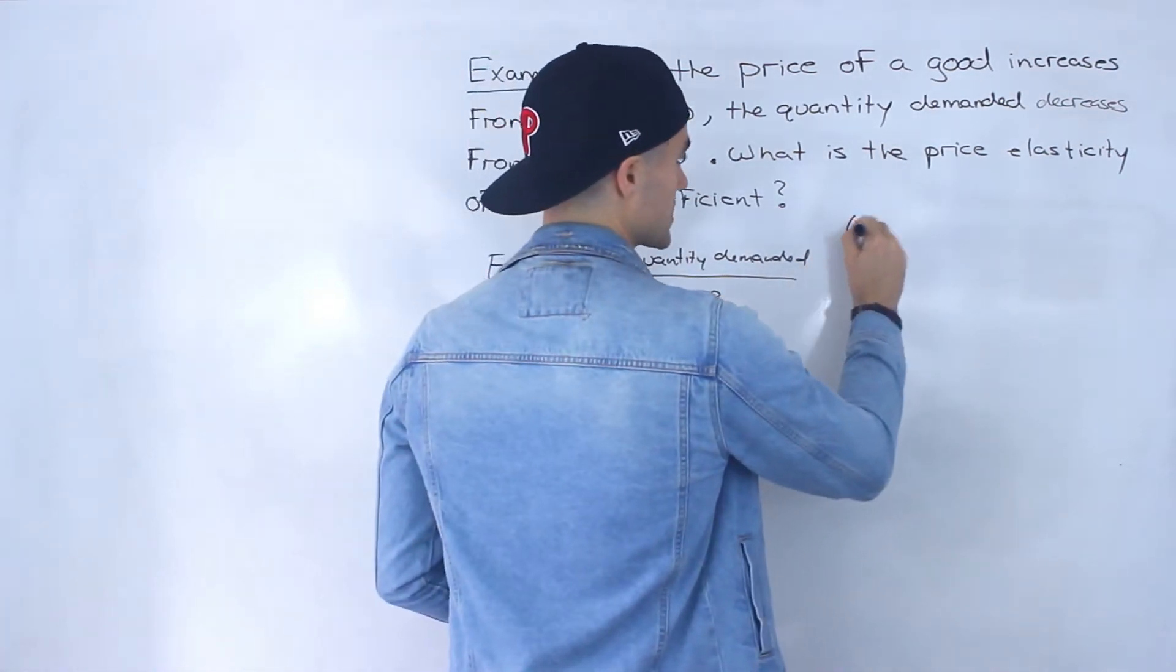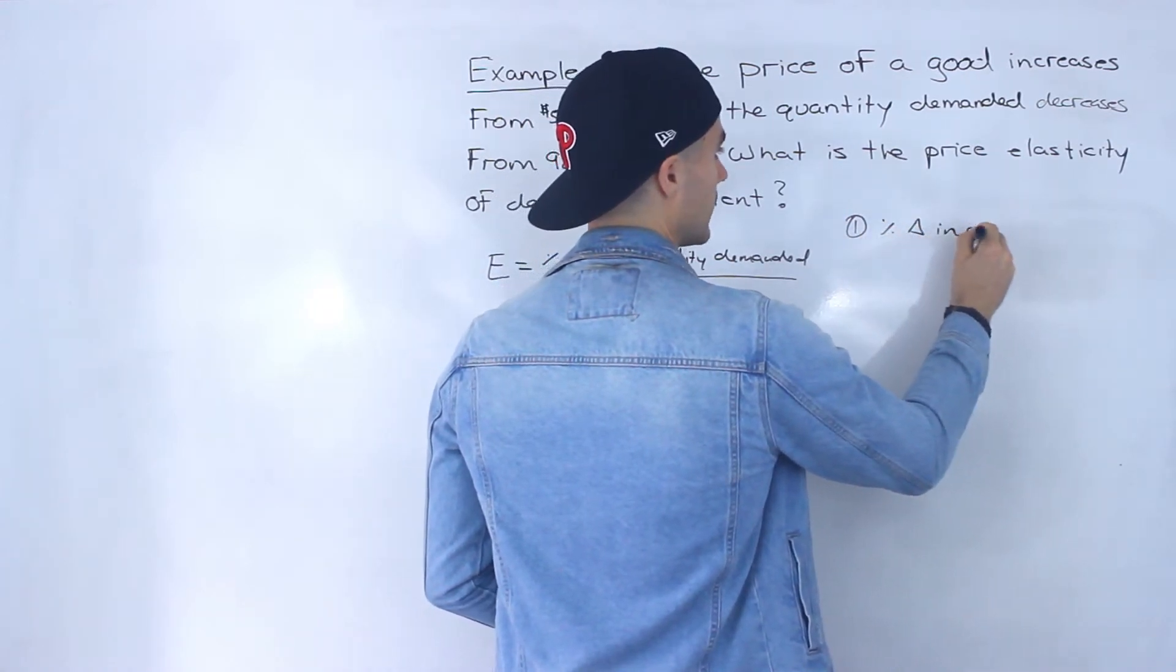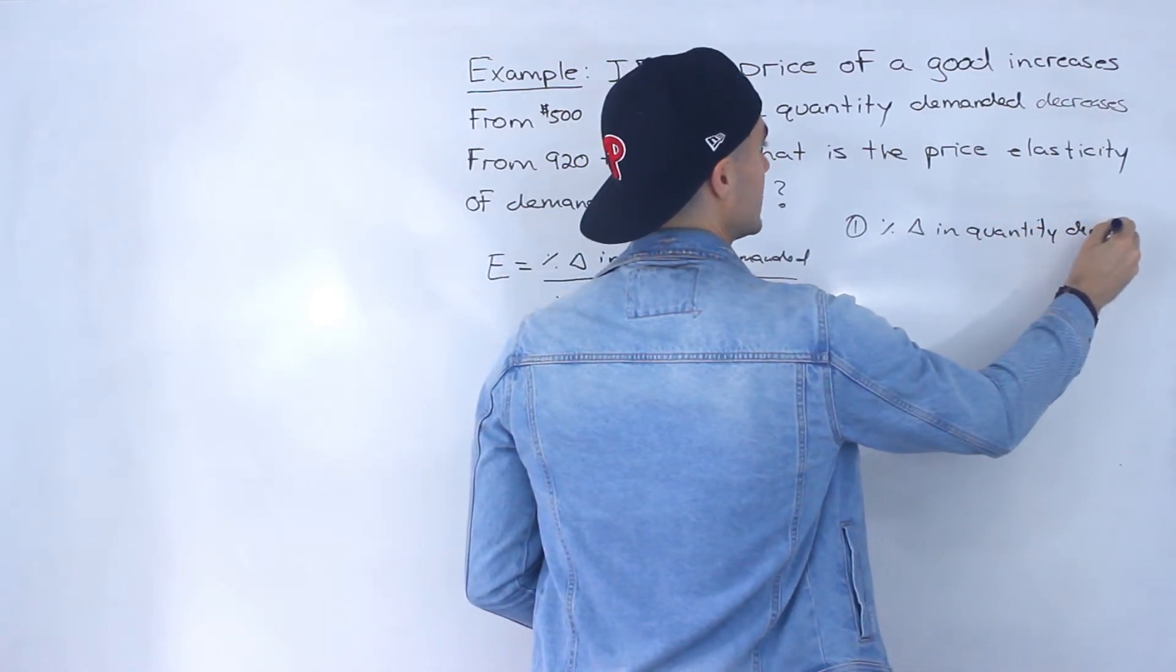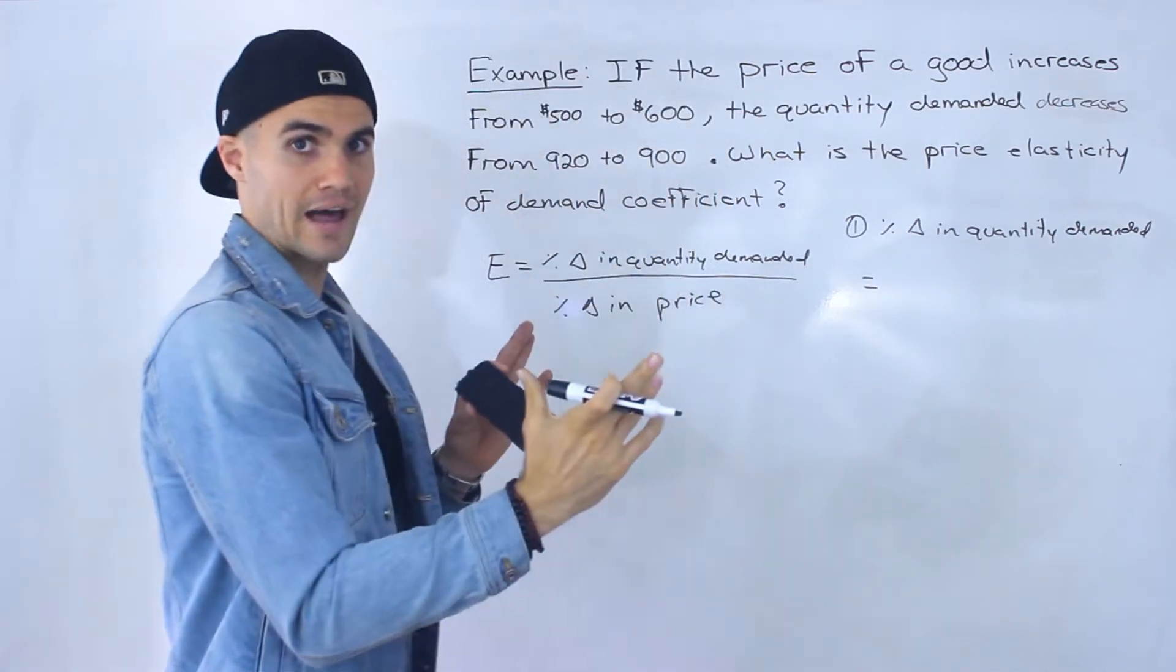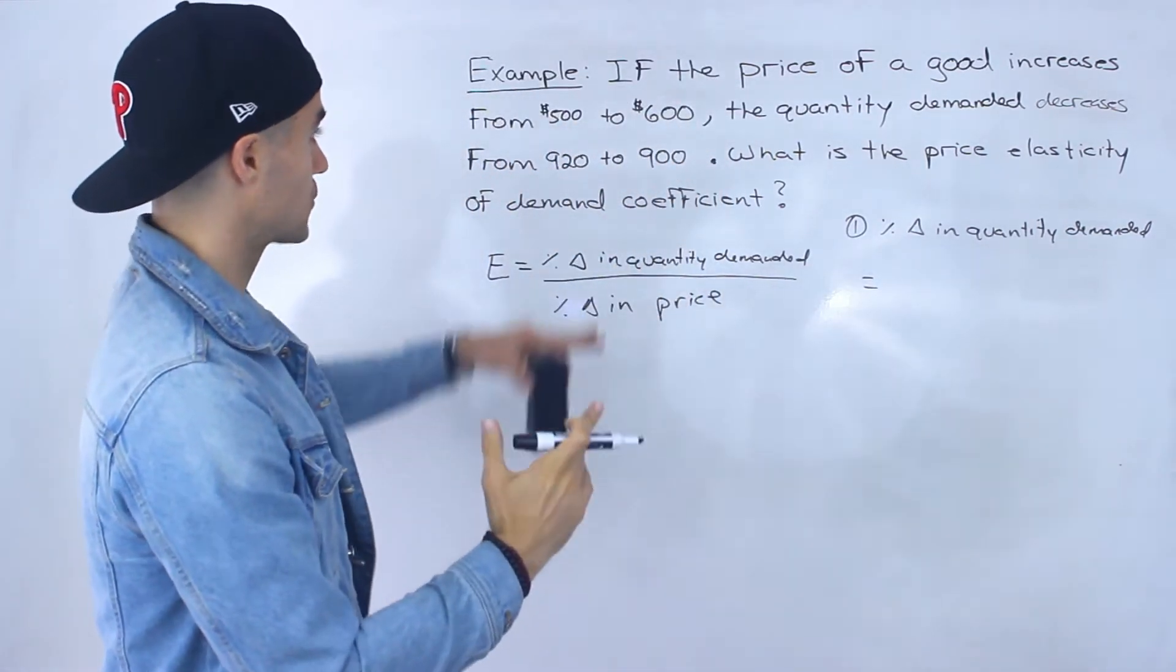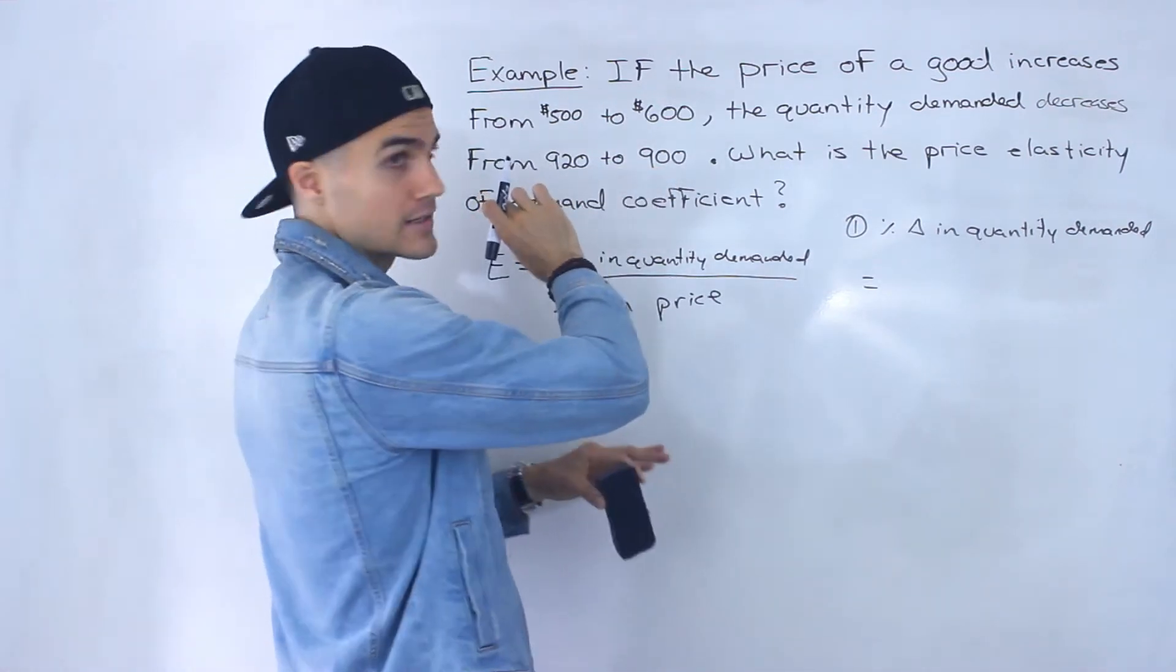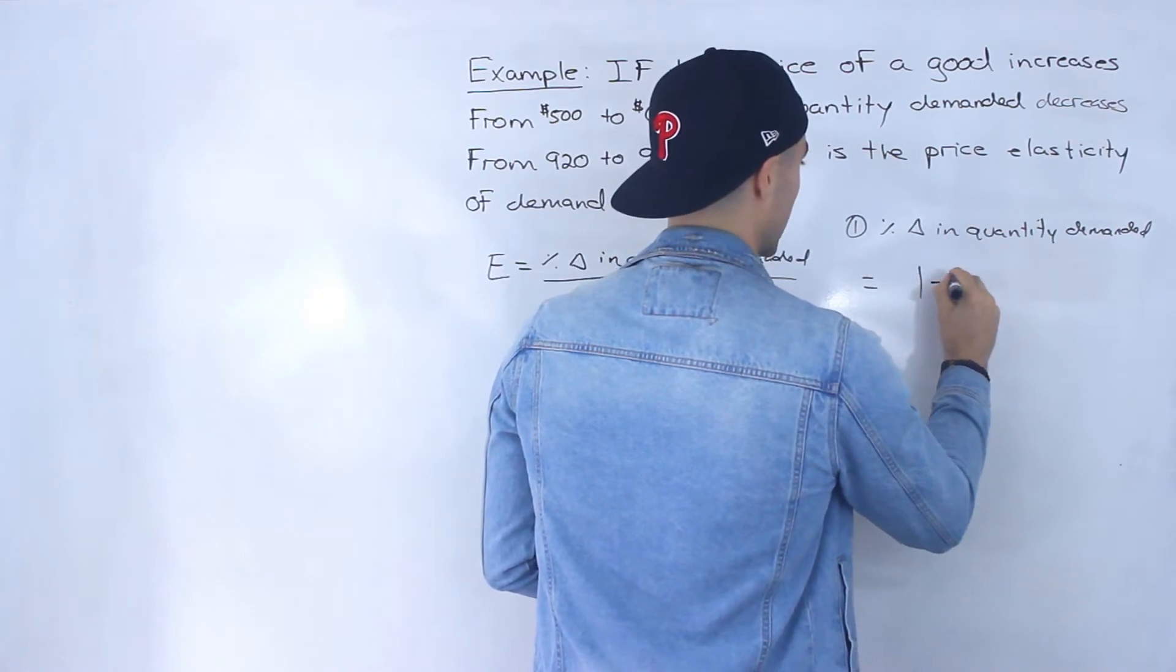So let's first, step one, calculate that percentage change in quantity demanded. And basically what it's going to be is the absolute value of the change in quantity. So it's going from $920 to $900. So notice that the quantity demanded is going down. So we'd have the absolute value of negative 20.